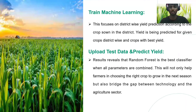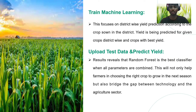Next, train the machine learning model. This focuses on district-wise yield prediction according to the crops grown in that particular district. It is used to give the best yield in that particular area according to soil, temperature, moisture, and climate conditions. Then, upload the dataset and predict the yield. The results taken from the trained machine learning model are compared with the uploaded dataset and give the best output and yield of the crop.